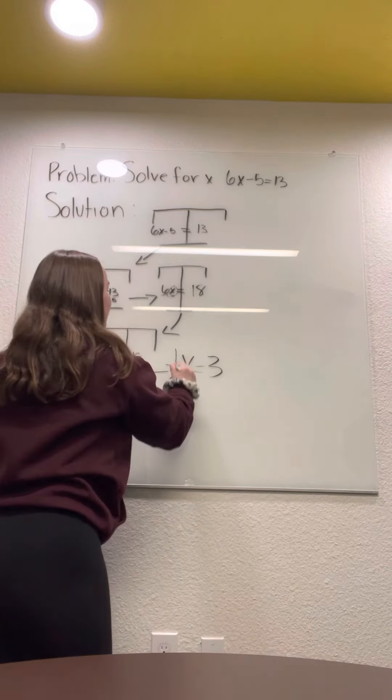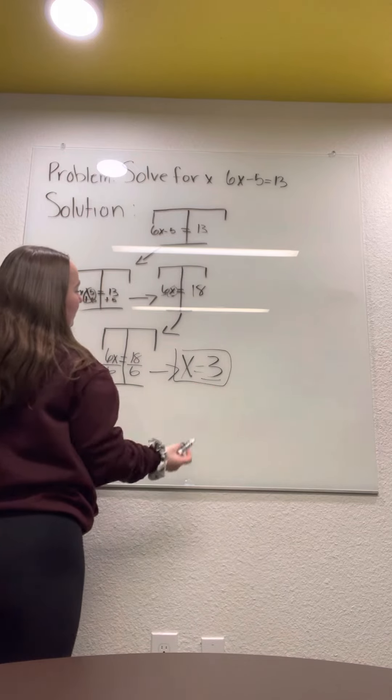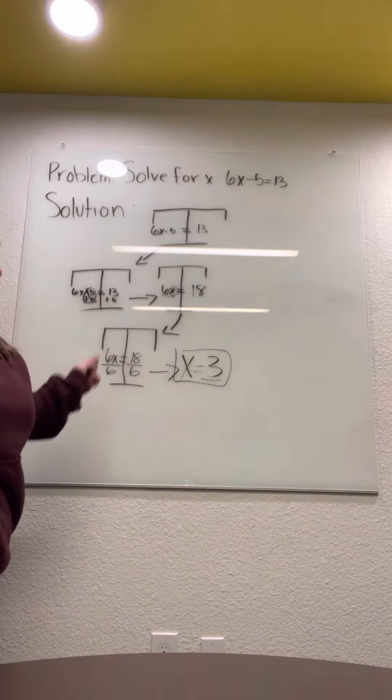And then that is our answer. So, we use all of this to find 3. And that is what x equals. We solved for x for the problem 6x minus 5 equals 13.